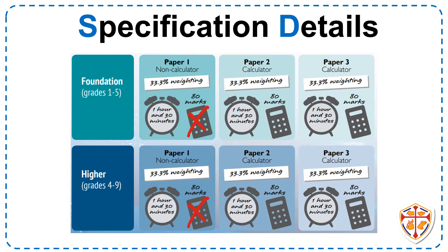You will either be completing the foundation paper or the higher paper. The foundation scores grades one to five, whereas the higher paper scores grades four to nine. Foundation is easier as there are fewer topics on it; however, for both foundation and higher you'll be completing three papers. Each paper is 80 marks and is an hour and 30 minutes long, and each paper is equally weighted, so it counts as a third of the GCSE.